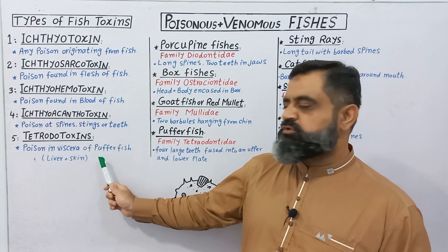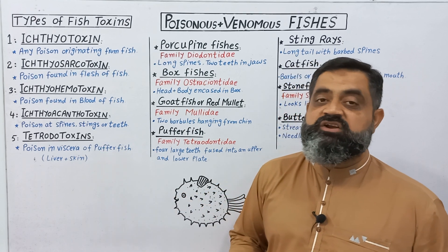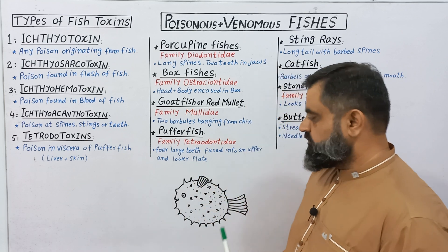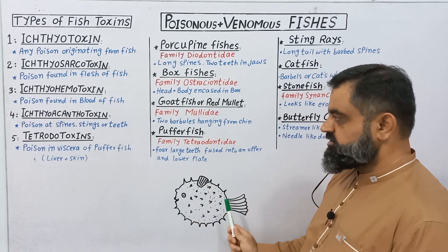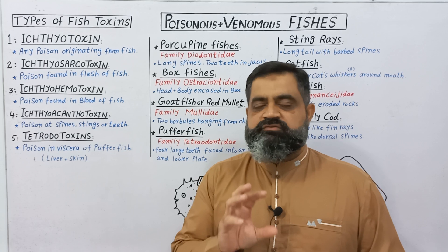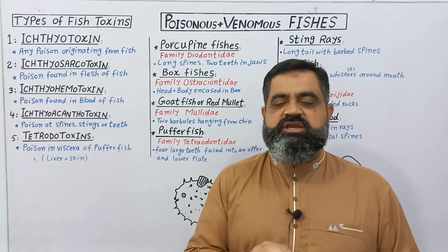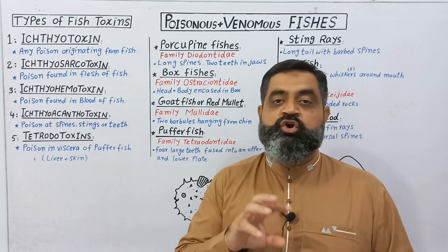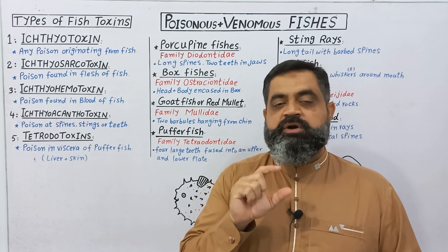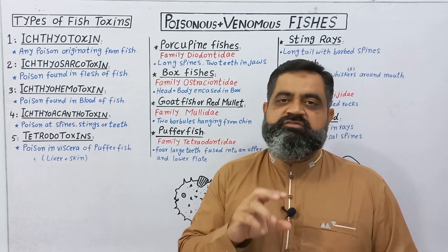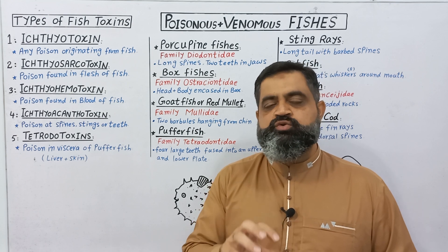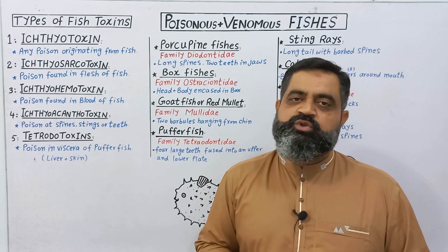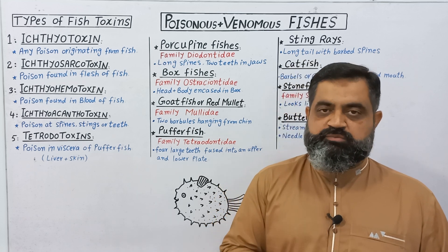The fifth type is Tetrodotoxin. These toxins are present in the visceral organs of specialized fish like puffer fish. If you look at this diagram, this is a puffer fish. The internal organs of this fish — like liver, skin, stomach, intestine, and other body organs — may contain very powerful toxins, and if a person or animal consumes these organs, the toxins can be transmitted into their bodies and can cause serious harm.